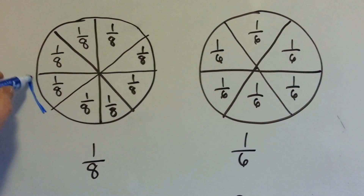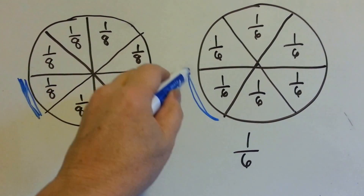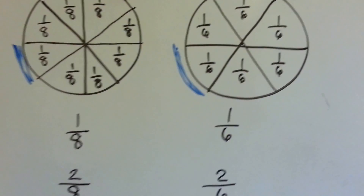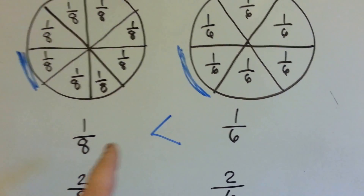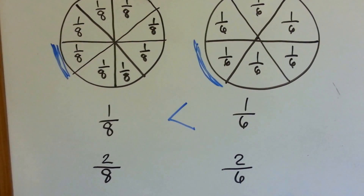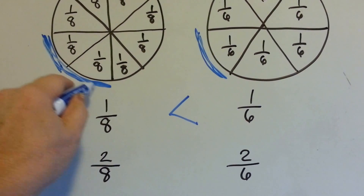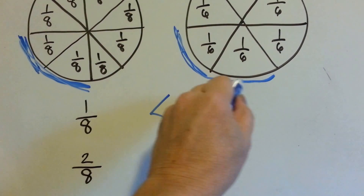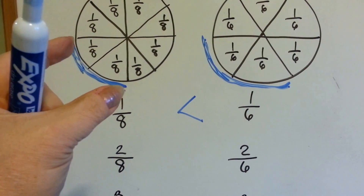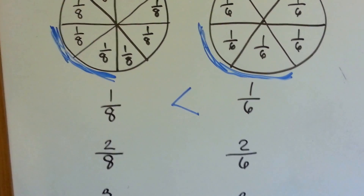This is the space of 1 eighth right here. This is the space of 1 sixth. Can you see which one's bigger? The 1 sixth is bigger. How about 2 eighths or 2 sixths? Here's 2 eighths. Here's 2 sixths. Can you see which one's bigger? The 2 sixths.